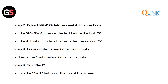Step 7: The SMDP+ Address is the text above the first dollar sign. The Activation Code is the text after the second dollar symbol. Step 8: Leave the Confirmation Code field empty.